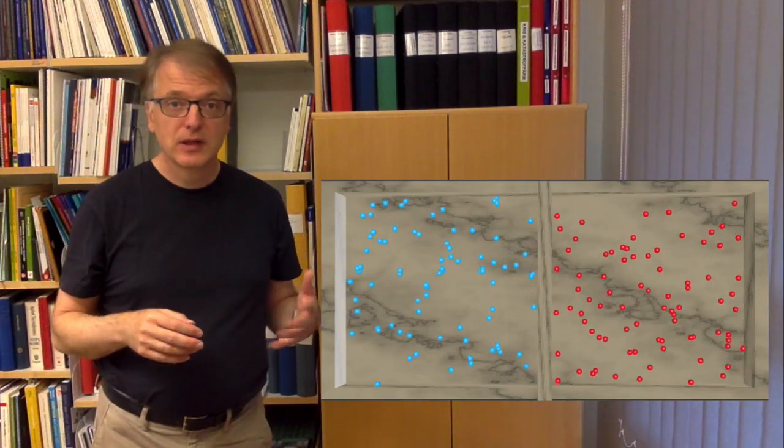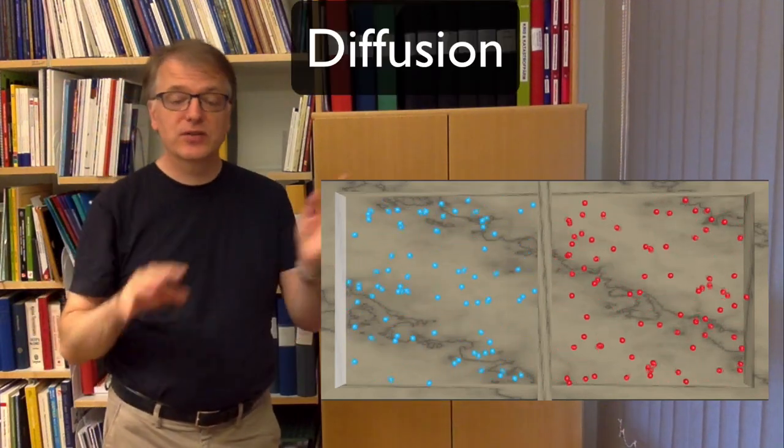On the molecular level, however, we always have random movement, Brownian motion. So molecules move, they collide with each other and change direction.